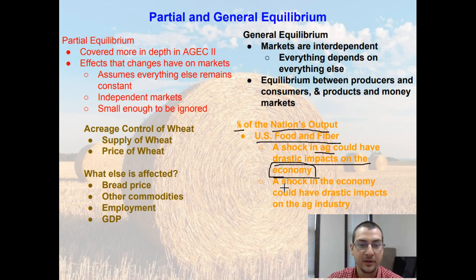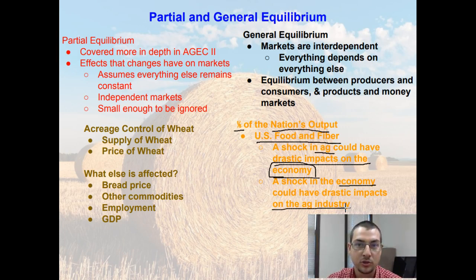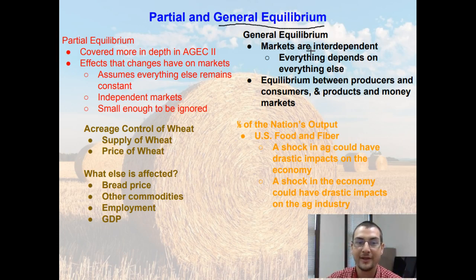By the same token, a shock in the macroeconomy and the whole economy of the United States would have drastic impacts on the agricultural industry. For example, if interest rates started increasing drastically, farmers are not going to be going out and buying new equipment, which could cause them to not produce as many crops, having a drastic impact on the agricultural industry itself. So from here on out, we're going to focus on general equilibrium, which looks at how different markets are all interdependent and how everything depends on everything else.